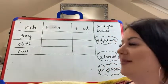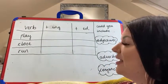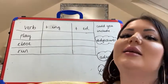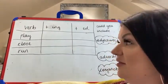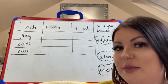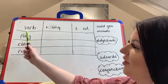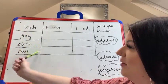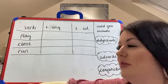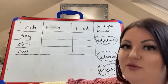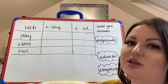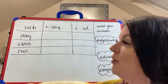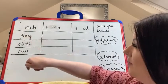The grammar task this week involved writing verbs in sentences. I've picked a few of the verbs from your list: the verb to play, to close, and to run. You need to remind yourself of what a verb is. A verb is an action word — it's something that we can do. So these are our verbs here.